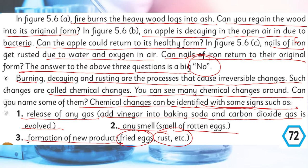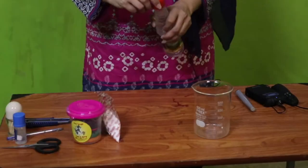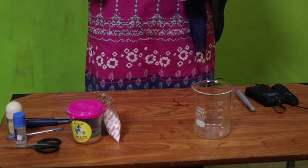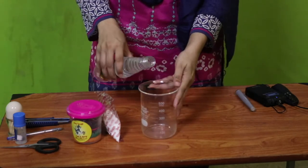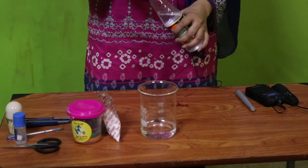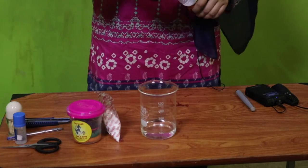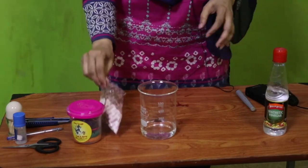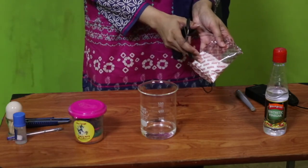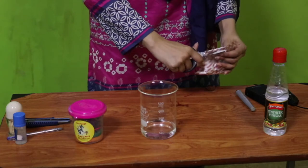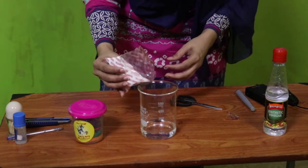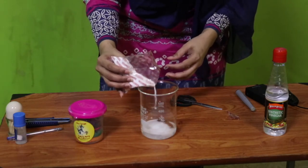Now I have vinegar here — sirka — which is easily available at home. Your mother often has baking soda when she bakes cakes. What I will do is add some vinegar into the beaker. This is not water — this is vinegar. It is an acid. Baking powder is also used in many foods and cakes. Now watch carefully as I add baking soda into the vinegar.